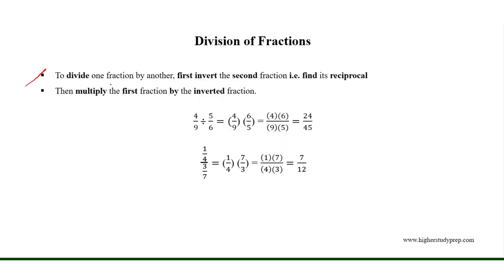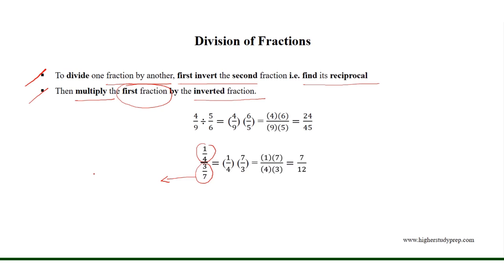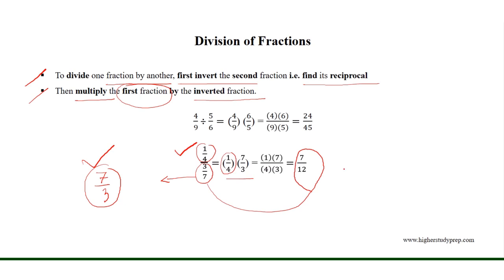To divide one fraction by another, first invert the second fraction, that is, find its reciprocal. Then multiply the first fraction by the inverted fraction. For example, 1 over 4 divided by 3 over 7. The second fraction is 3 over 7, and the reciprocal of the fraction is 7 over 3. So we multiply the first fraction, 1 over 4, by the reciprocal fraction, 7 over 3. Thus, the division results in 7 over 12.